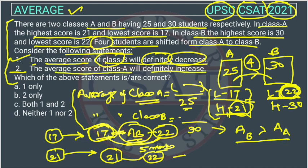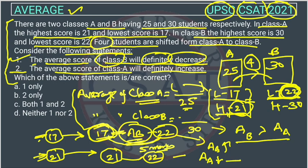Now for the second statement: the average score of Class A will definitely increase. If we shift the minimum-marks students out of Class A, its average will increase. But if we shift the highest-marks students to Class B, the average of Class A will decrease. So we cannot definitively conclude what happens to Class A's average. Therefore, only the first statement is correct, and the answer is Option A.